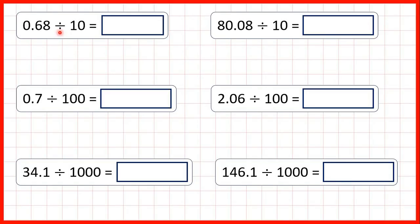Now we need to divide decimals by 10, 100 or 1000, and to do that we always start in the same way.